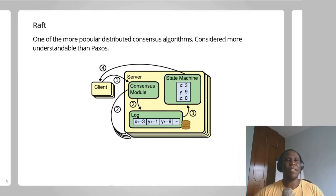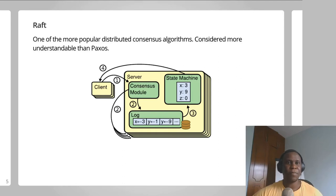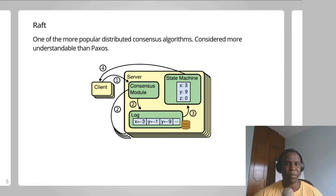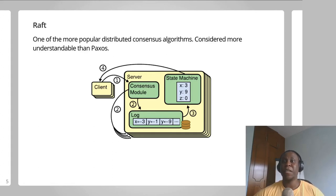I have touched on some of the principles behind distributed consensus algorithms, and I've also mentioned that Paxos is one of the popular distributed consensus algorithms. I am now going to narrow down on one distributed consensus algorithm and talk about how it works — and it will not be Paxos. The algorithm I am going to talk about is Raft. Raft, just like Paxos, is one of the more popular distributed consensus algorithms. It is, however, considered easier to understand than Paxos.